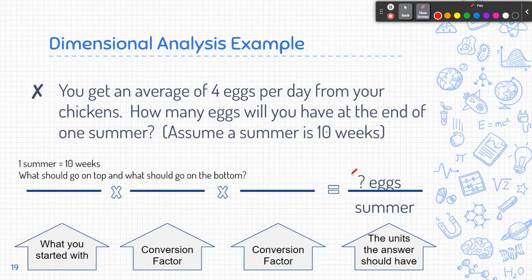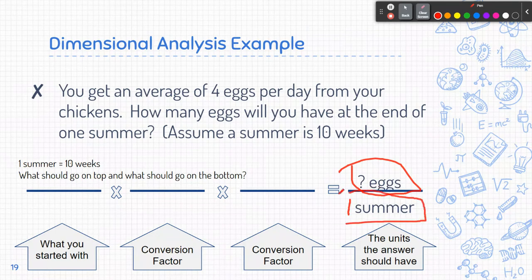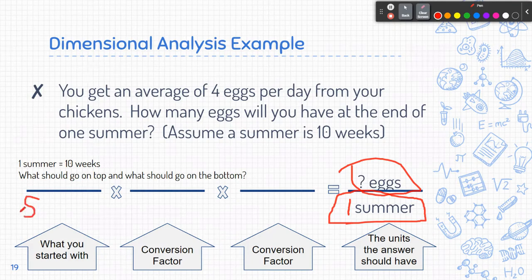And so I want to know how many eggs in one summer. So even though it doesn't say one summer, that's in one summer. And I know that one summer is 10 weeks. So I need to start by figuring out what goes on the top and what goes on the bottom. Well if I want summer to end up in the bottom, it's a good idea to start with summer in the bottom over here.